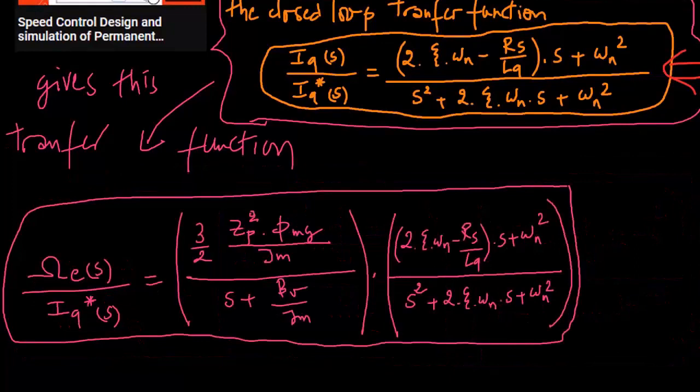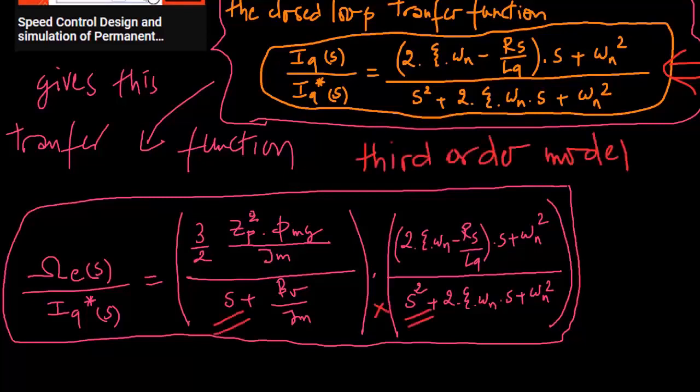To design a PI controller, a first-order model is essential, as evidenced in our first three videos in this series. Since the aforementioned transfer function is a third-order model, it needs simplification to a first-order model for ease of application.